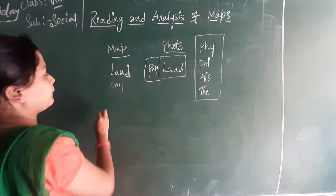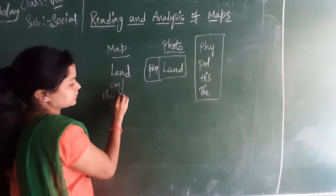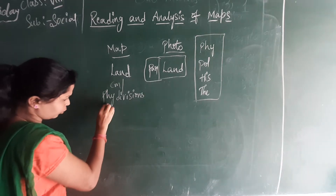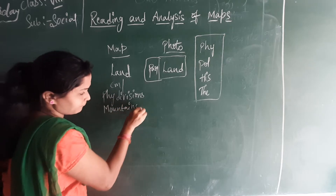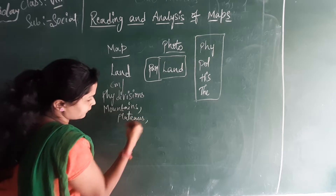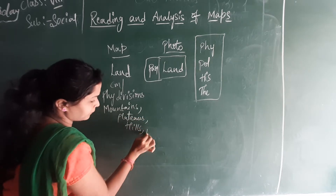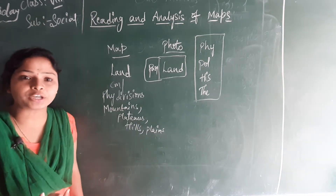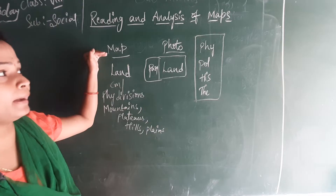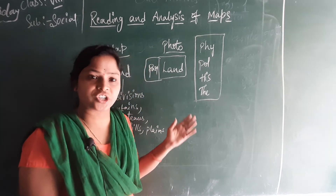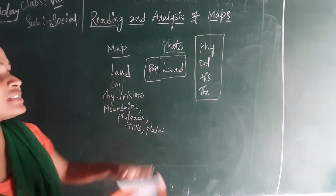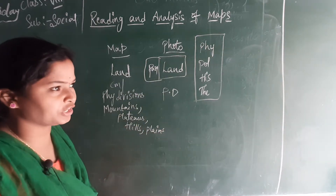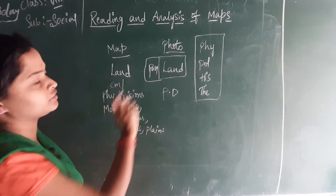Coming to the next difference: in the map you can see the physical divisions. What are the physical divisions? For example, mountains, plateaus, hills, and plains. You can see a clear picturization of the mountains, plateaus, plains, hills, and water bodies in a clear manner in a map. But coming to the photography, you cannot see a clear picturization of a mountain — just you can see the mountains and water bodies are present, but you cannot see clear physical divisions in the photography.